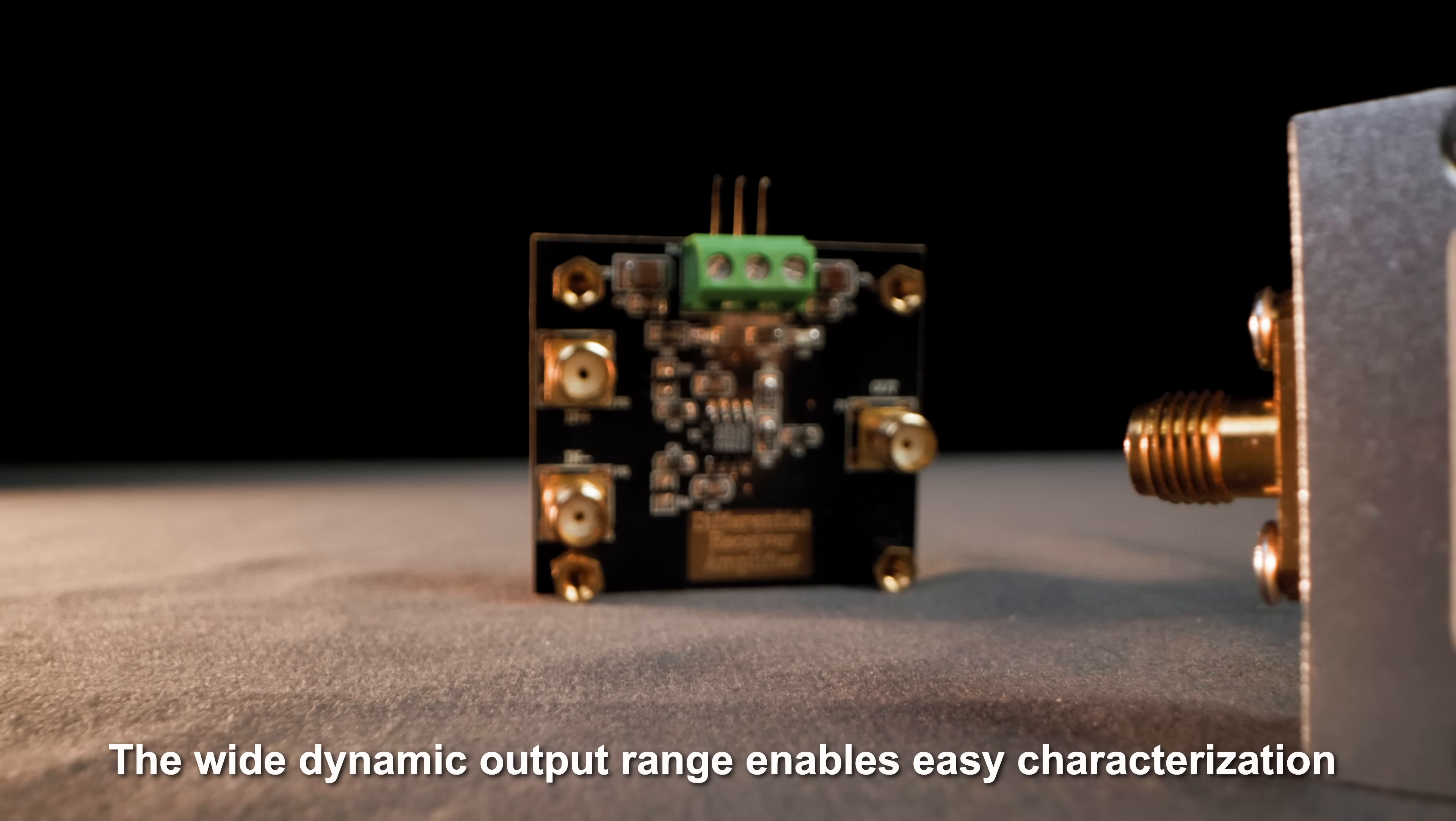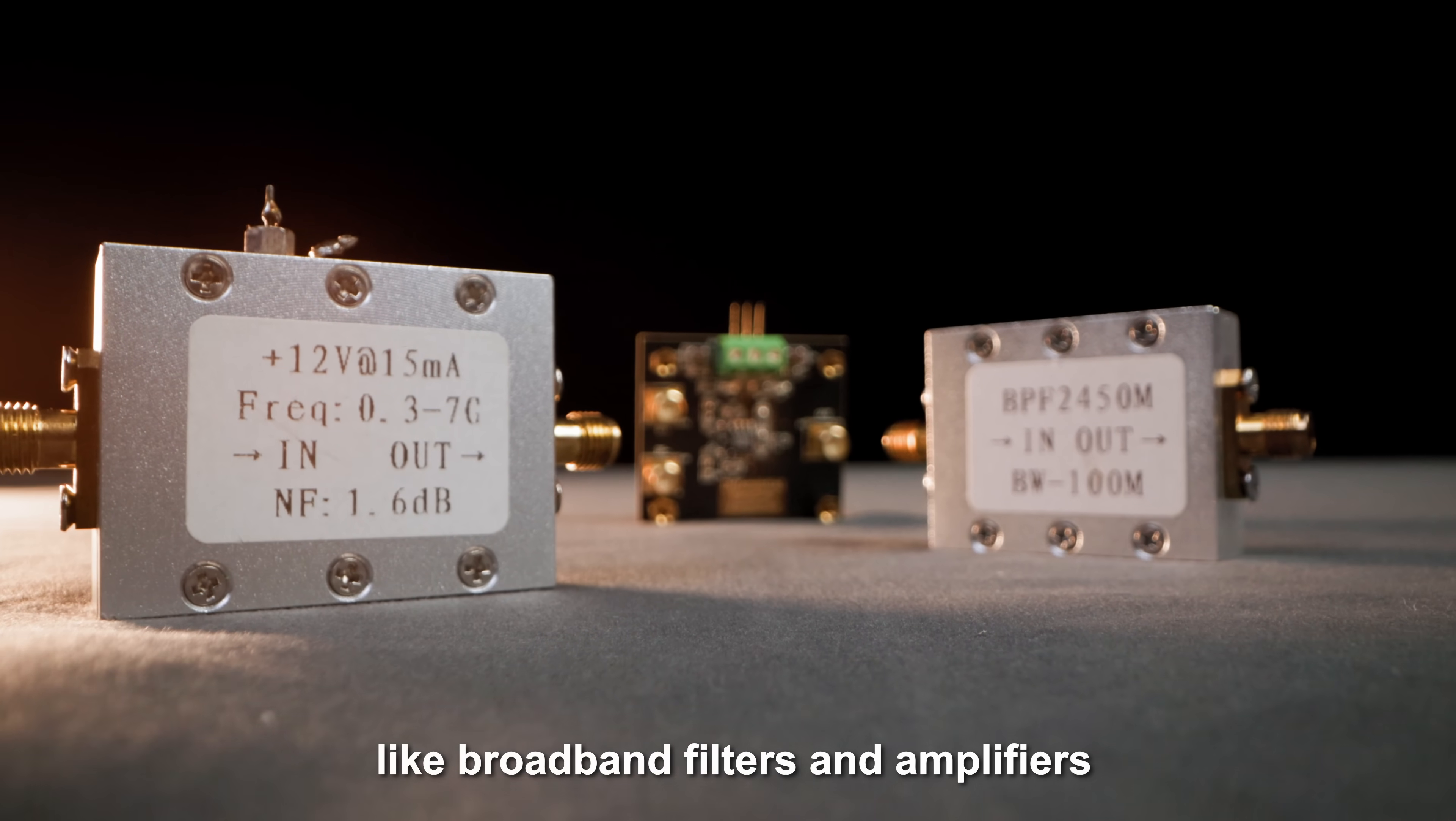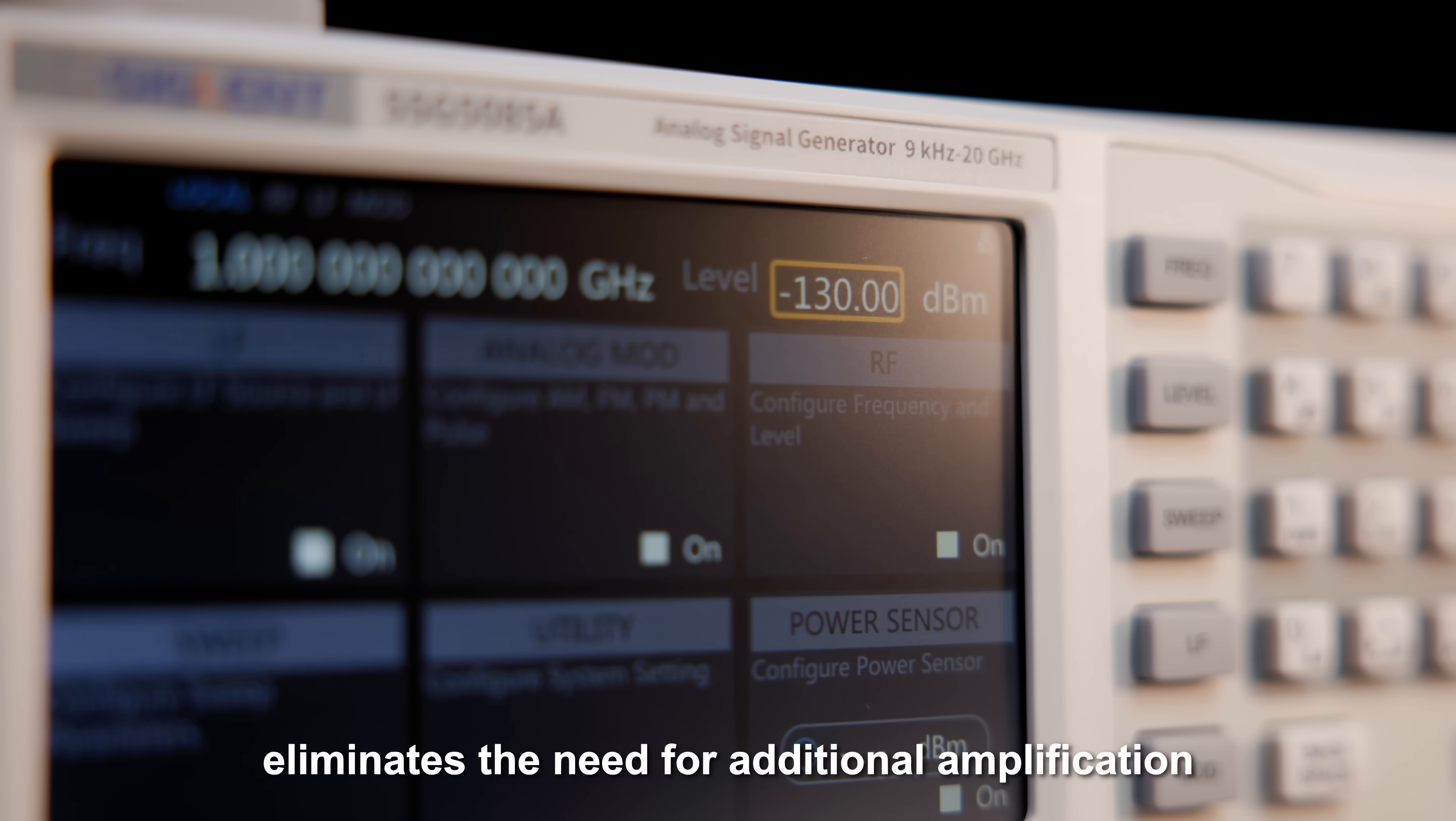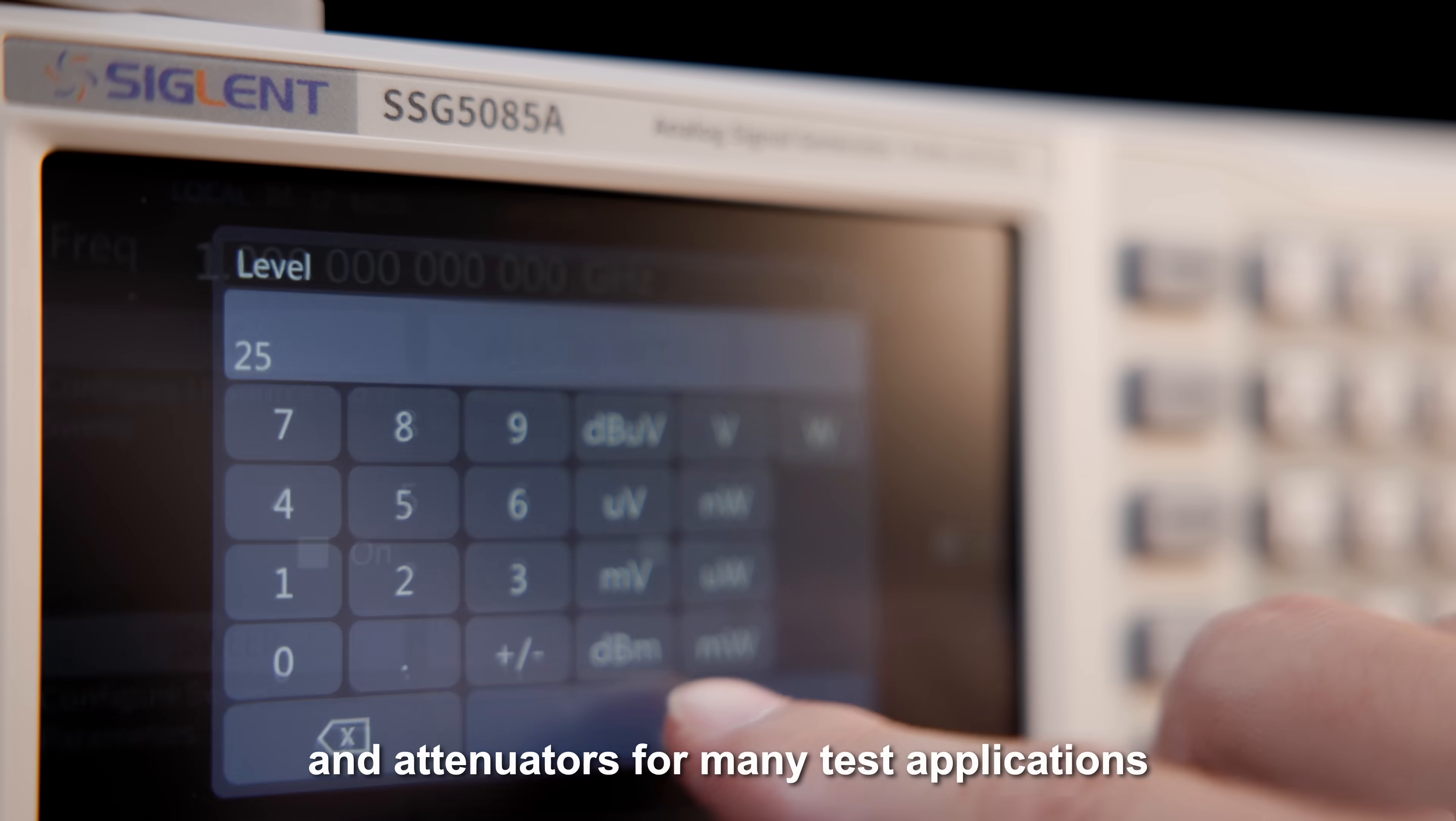The wide dynamic output range enables easy characterization of microwave components like broadband filters and amplifiers. Set points from minus 130 to plus 25 dBm eliminates the need for additional amplification and attenuators for many test applications.